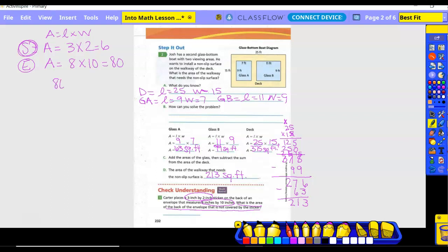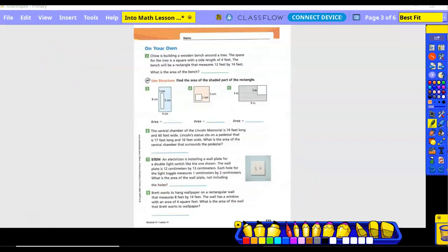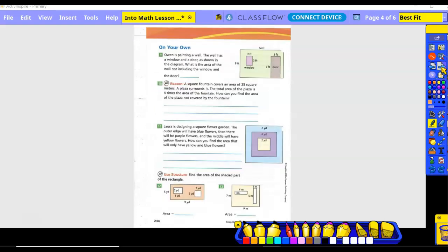We need to take 80 minus 6 to get 74 square inches. You guys are going to do this painting problem for a small group or partners. We're going to finish off the back and then you'll get with those people.